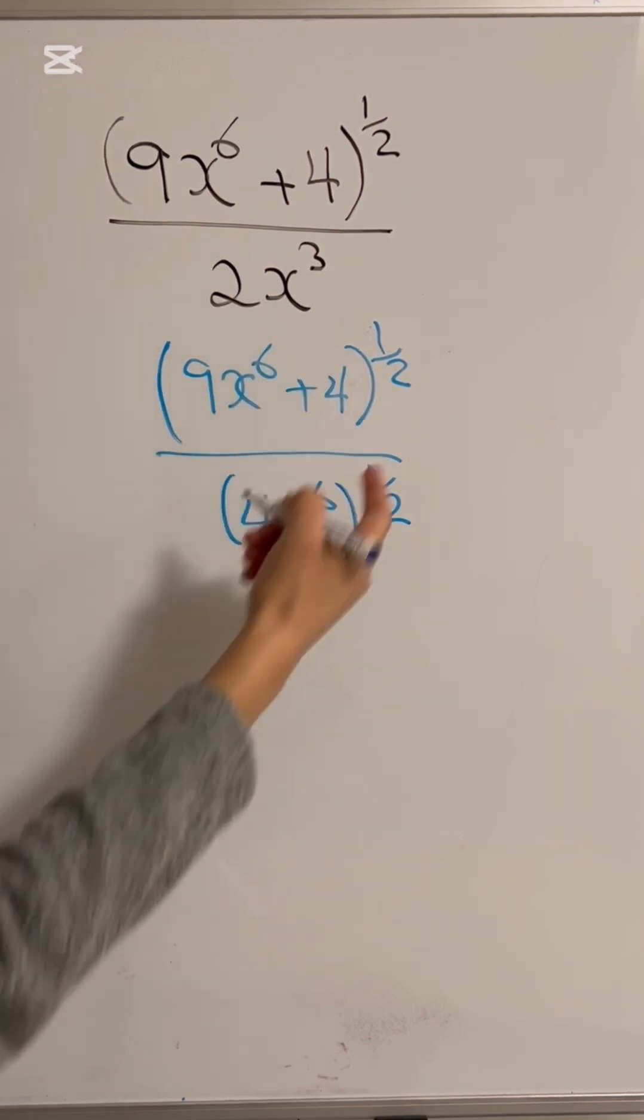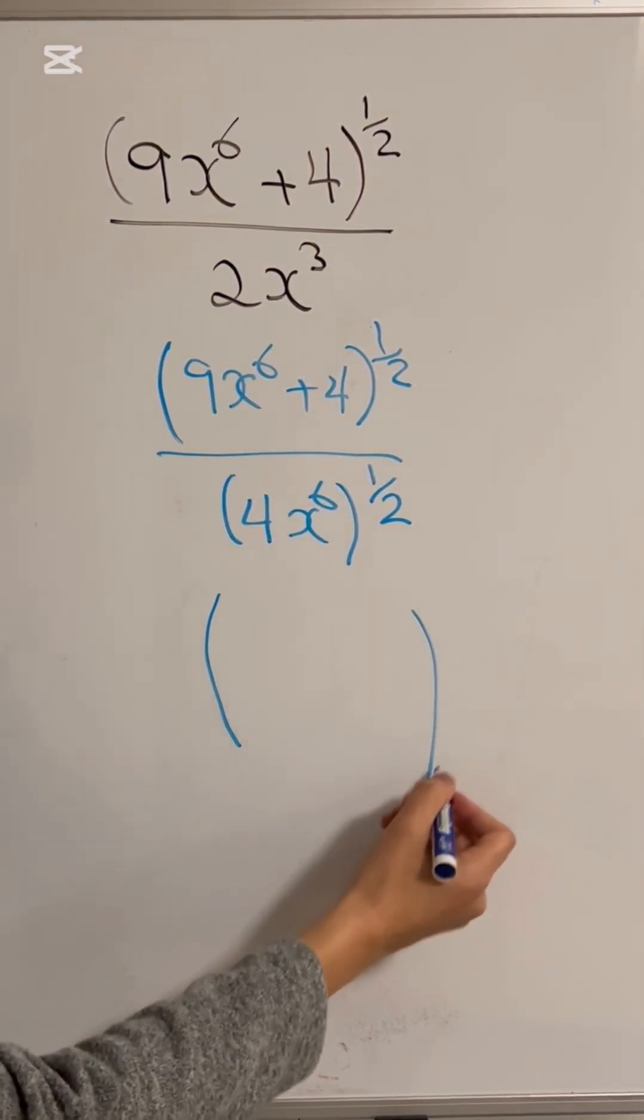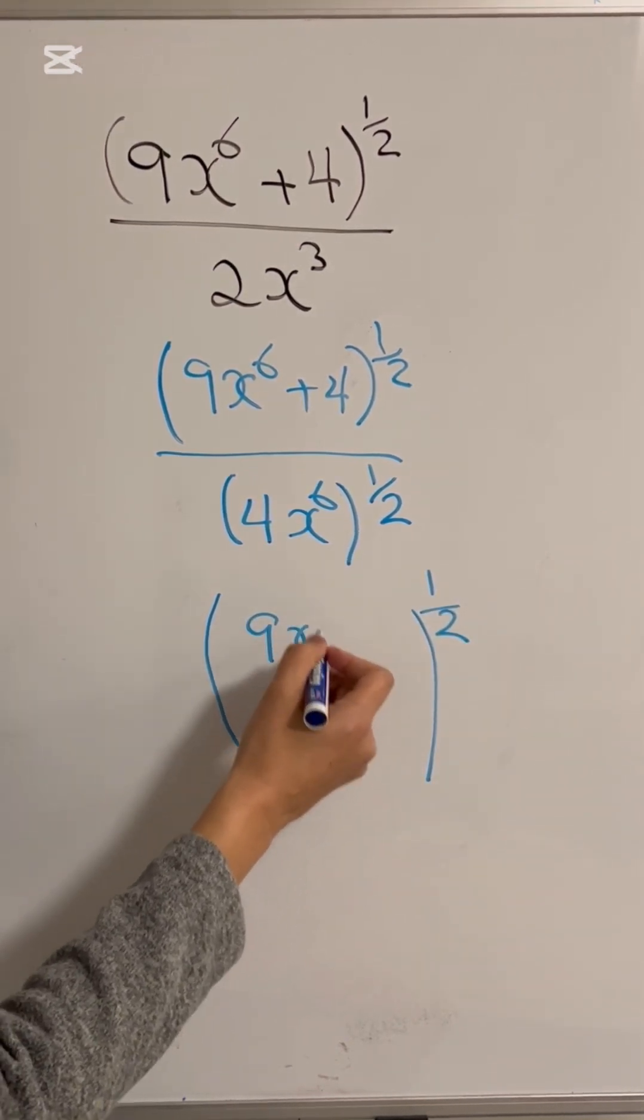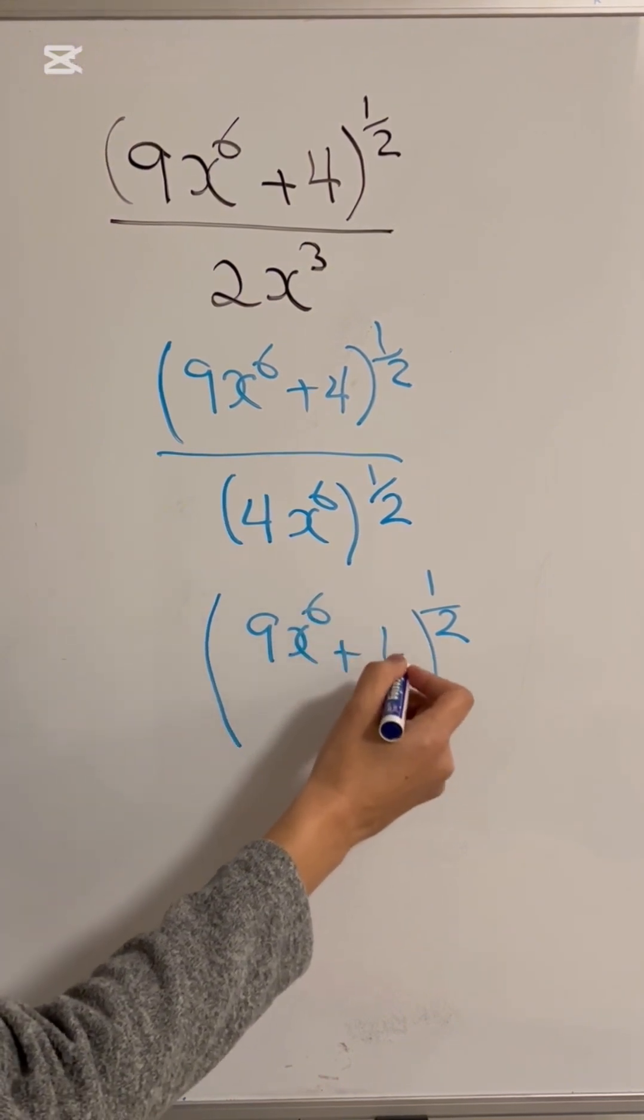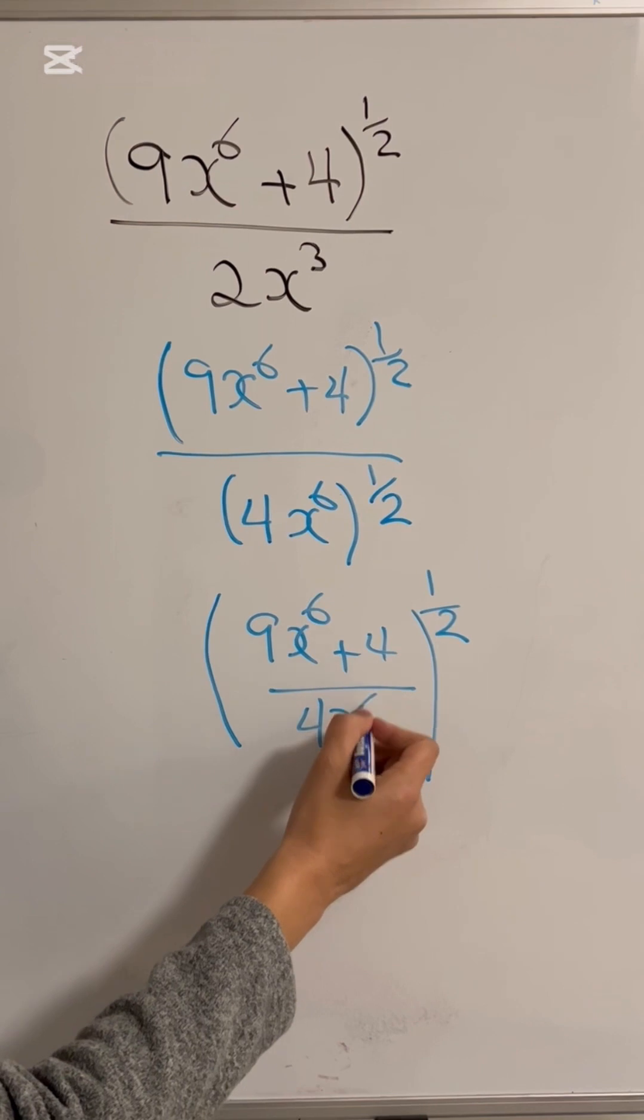Now, because both of them have the same exponent, then you're able to put everything to the power of 1 half and change that to 9x to the 6 plus 4 all over 4x to the 6.